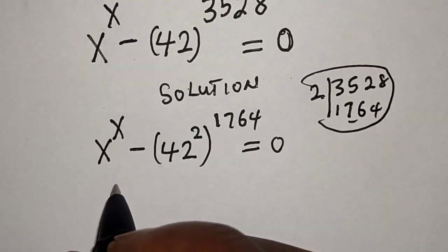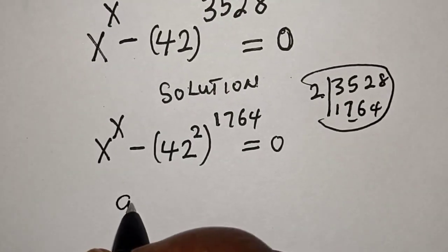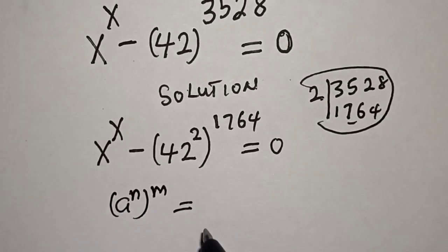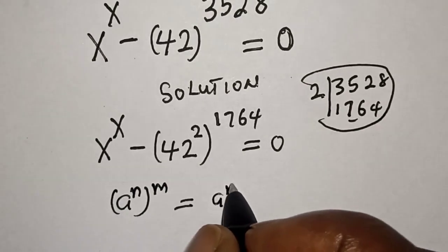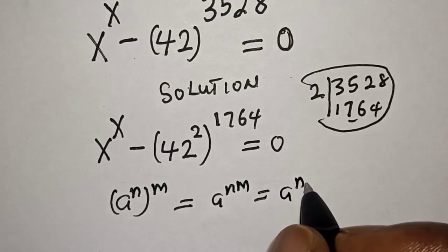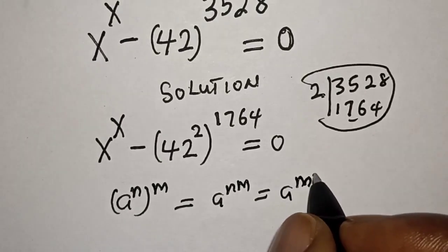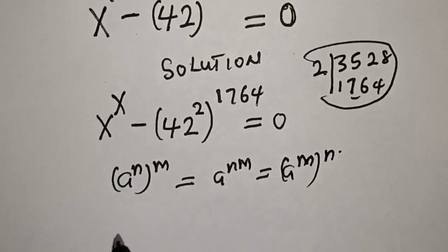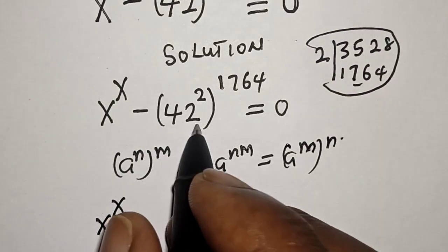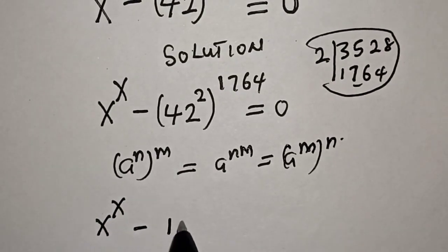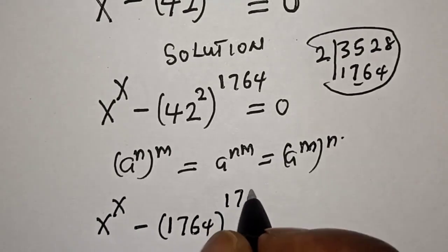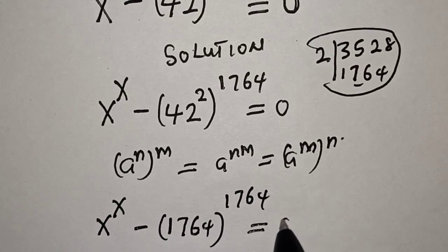Remember this rule: a raised to power n, raised to power m, is equal to a raised to power n times m. Then we have s raised to power s, minus 42 squared, raised to power 1764, is equal to 0.